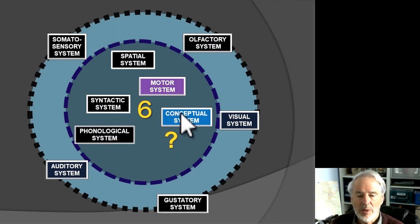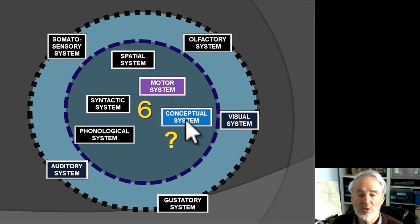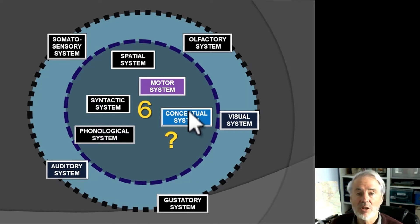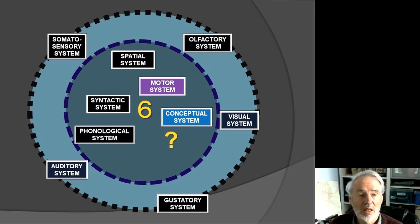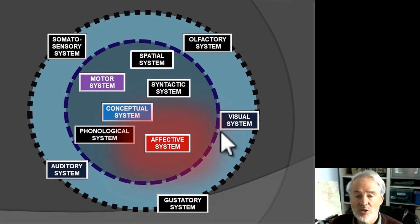The human conceptual system is where abstract meanings are stored and processed, and there is good evidence that the brain has its own conceptual system also. But I've left one out — and that is indeed the one I'm going to concentrate on — and that is the affective system.